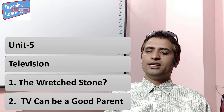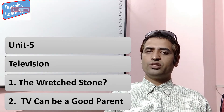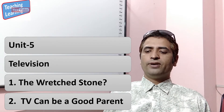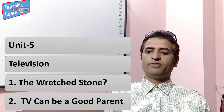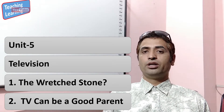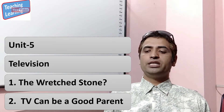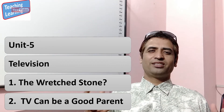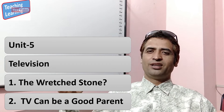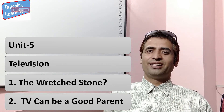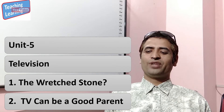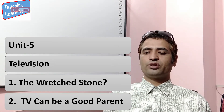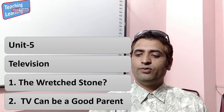Unit 5's title is Television. Whenever we hear or read the word television, we understand what it is — a device in which we can have audio and video together. The first text of this unit is 'The Wretched.' The word 'wretched' means something with bad luck, bad symptoms, something negative. It is written by Cheers where a spark, who is from the nice class.